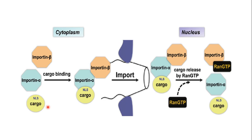As a recap of the previous video: the importin alpha binds to importin beta and the cargo or target protein. In the target protein there is a specific sequence known as the NLS binding site. Importin alpha has an NLS binding site and also a binding site for importin beta. When this trimeric complex forms — importin beta, importin alpha, and the cargo — importin beta has specialized HEAT repeats. In the nuclear pores there are FG sequences, so importin beta utilizes its HEAT repeats to bind to the nuclear pore, and the whole complex moves into the nucleus.